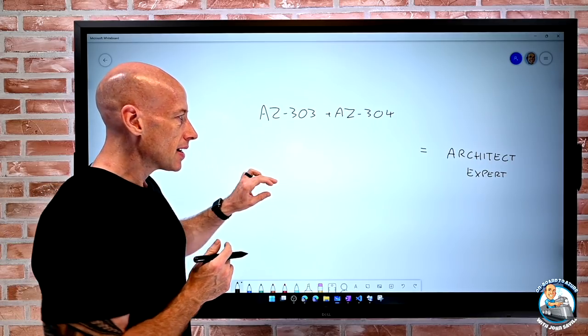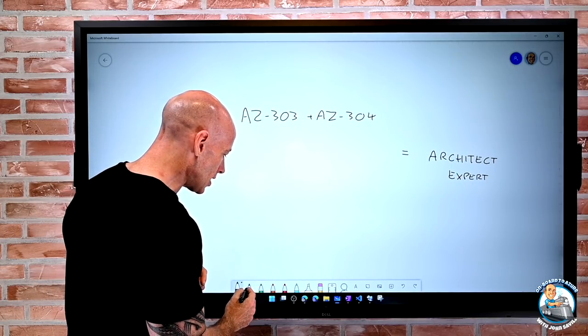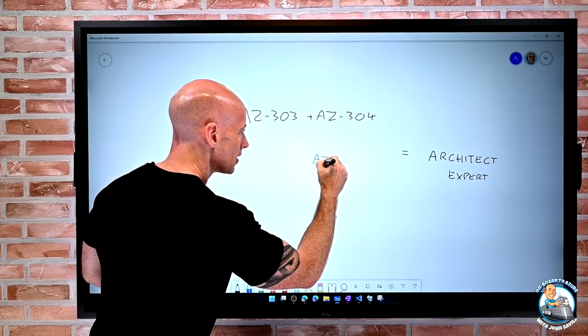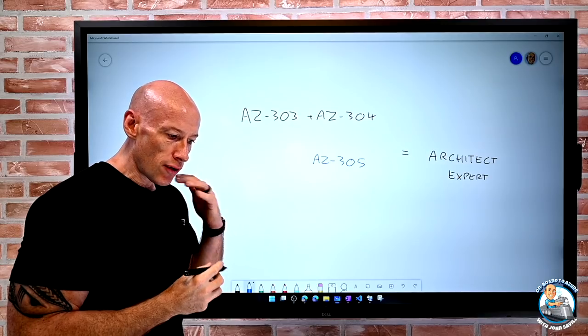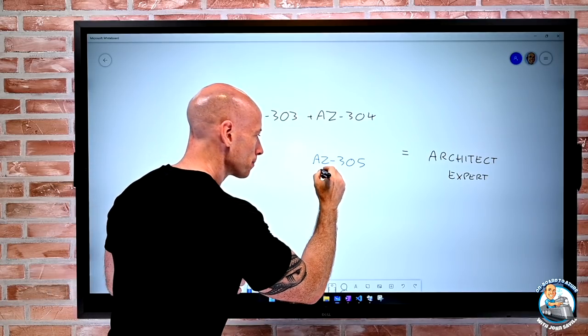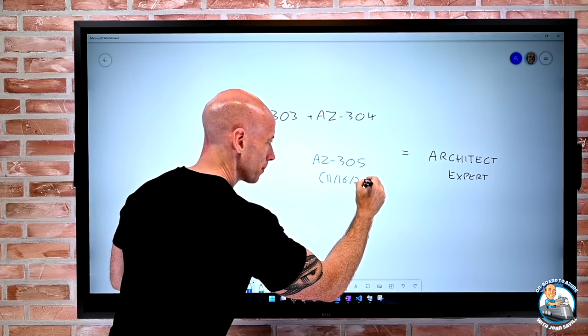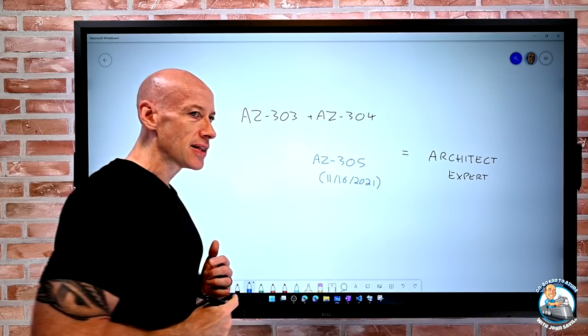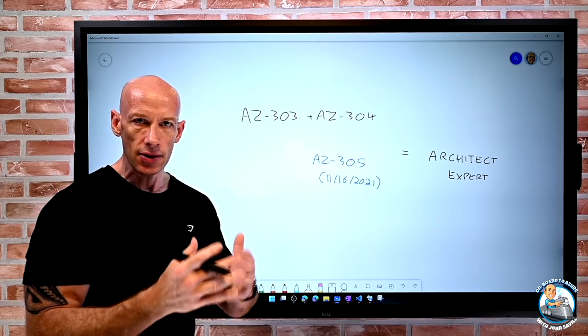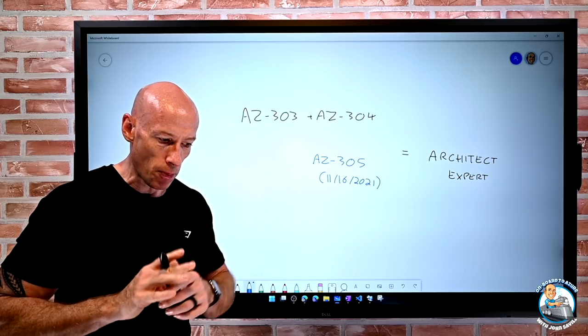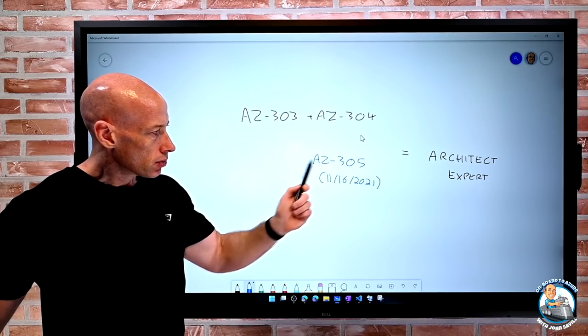So what's happening, they're introducing a new exam. So they're introducing AZ-305. So AZ-305 is going to be available in beta on the 16th of November. Now remember if you take it in beta you don't get the results straight away, but if you pass it still counts as just a regular exam. You just have to wait a little bit to get your results. So they're introducing this new exam.